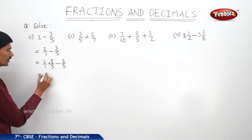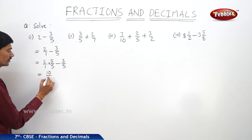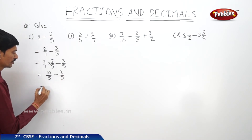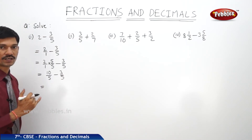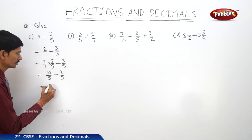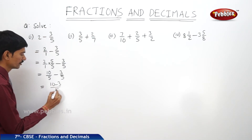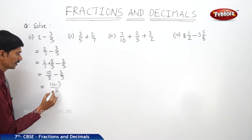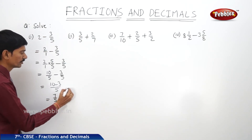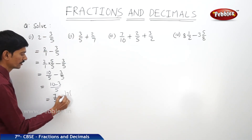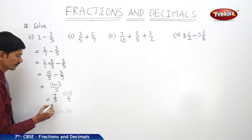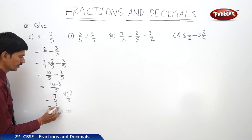2 fives are 10/5 minus 3/5. Now the denominators are equal — they are like fractions — so we subtract the numerators: 10 minus 3 equals 7/5. Written as a mixed fraction: dividing 7 by 5 gives 5 ones are 5 with remainder 2, so we get 1 and 2/5.